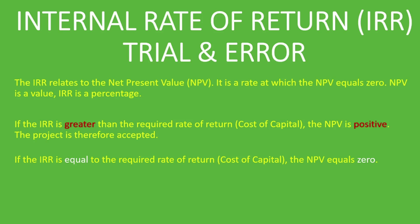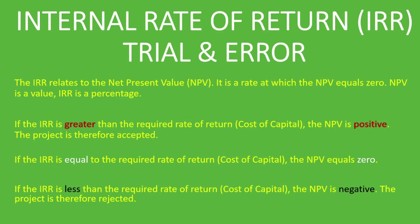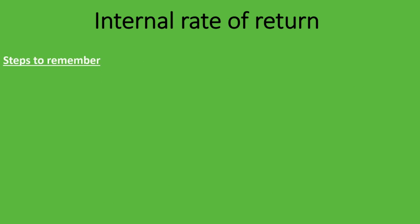The IRR is the rate at which the NPV equals zero. So if the required rate of return is the same as the IRR for a project, the NPV will equal zero. We'll use 'required rate of return' and 'cost of capital' interchangeably. If the IRR is less than the required rate of return or cost of capital, the NPV is negative and the project is rejected.